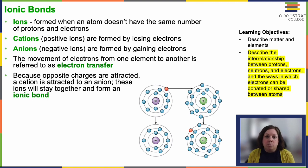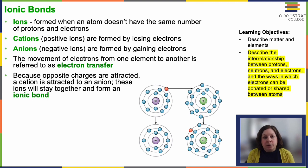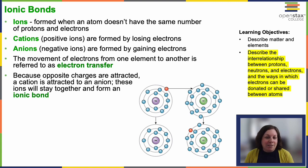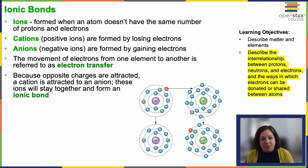Anions are negative ions formed by gaining electrons, so they have more electrons than protons. A way to remember this — it comes from way back when I took chemistry — cations are 'plussy cats.' So you can remember that cations are positive. It's silly, but it sticks with you. It's stuck with me for about 20 years.